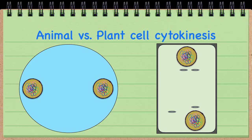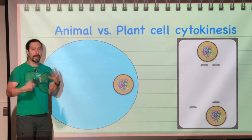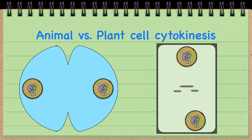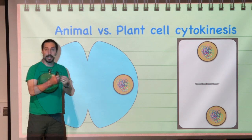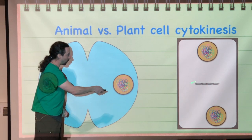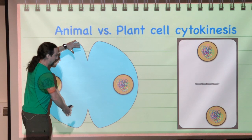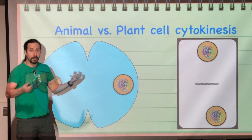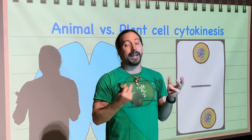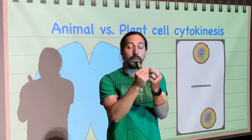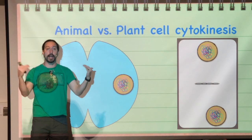Cytokinesis occurs a little bit differently in plant cells compared to animal cells, because plant cells have a cell wall. An animal cell can simply pinch in using microtubules — this is referred to as a cleavage furrow — and it will continue to pinch in until the two cells have separated out, giving us our two daughter cells. A plant cell can't do that; instead it has to build a cell wall in the center, working its way out. This is called a cell plate. The plant cell will continuously build that cell wall right across the middle until it has made its way entirely across, separating out each of the daughter cells.